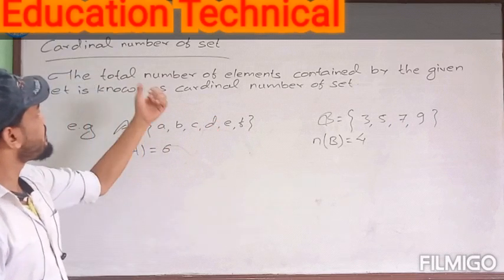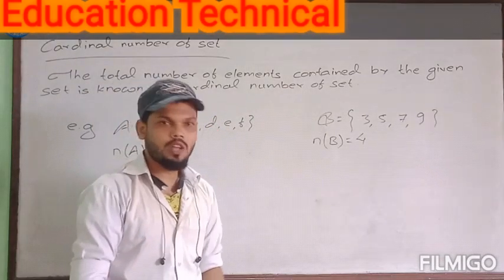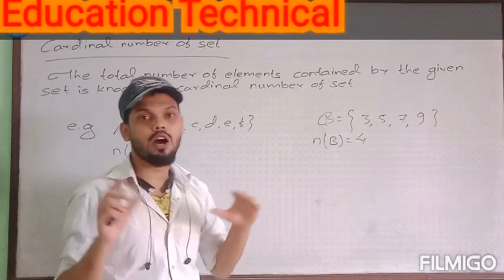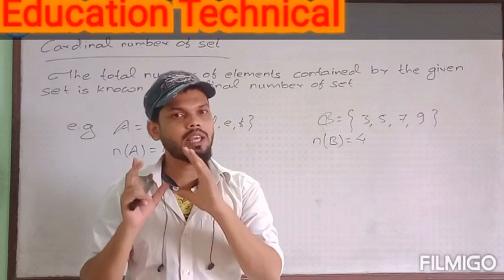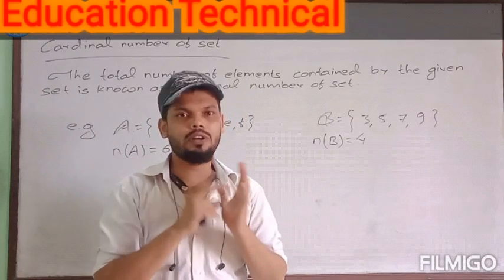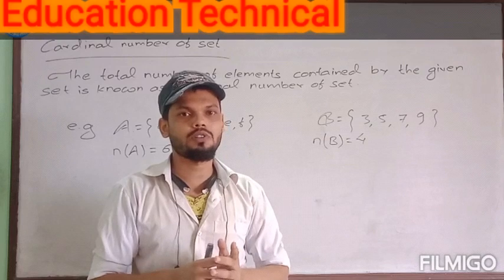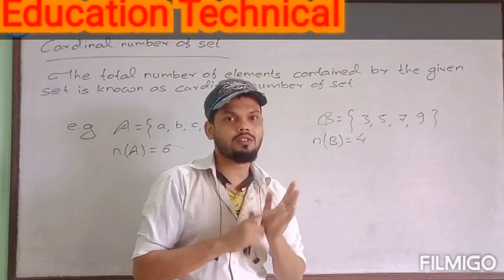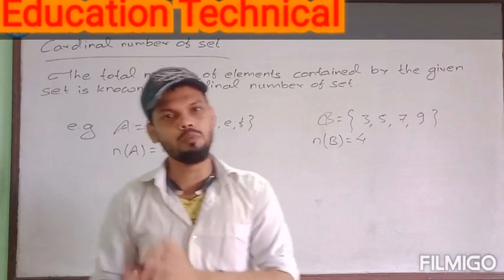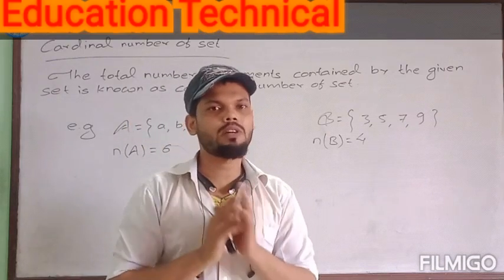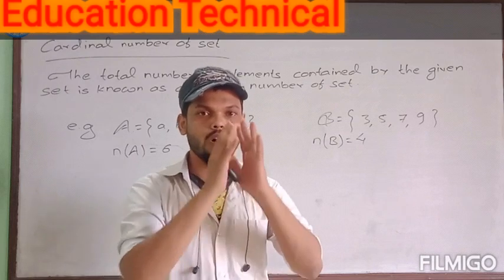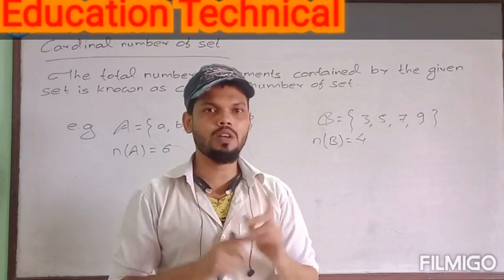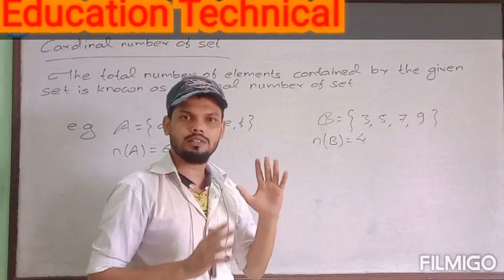Now we have understood about the cardinal number of a set. After this, I am going to teach you how to find or derive the formula so that we can easily derive different formulas for different conditions — for the case of overlapping sets and for disjoint sets. I will explain all of this using Venn diagrams as well.